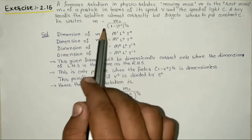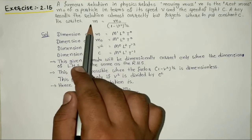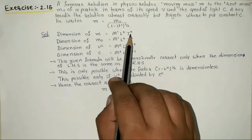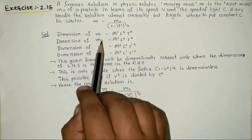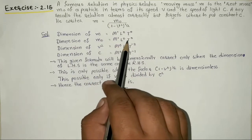Dimension of m is M¹L⁰T⁰. m0, the rest mass, has the same dimension: M¹L⁰T⁰.